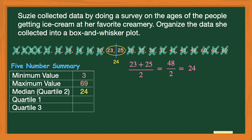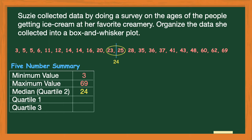Quartile one is also a median, but instead of being the median of the entire data set, it's the median of the numbers to the left of 24 — we call those the lower quartile. Using process of elimination on the lower quartile, I eliminate the smallest and then the largest, which is 23. Note that 24 is not actually a number in my data set. I keep going until I end up with one number in the middle, and that number is 12. So 12 is quartile one, the median of the lower quartile.